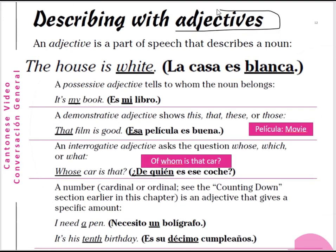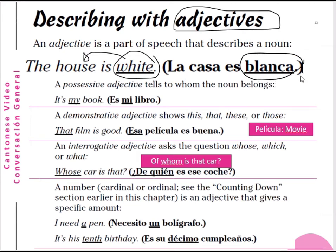Adjectives are also a very important part of speech. An adjective is a part of speech that describes a noun. For example, 'the house is white' — la casa es blanca. The color white is blanco, but when describing a feminine noun like casa, you must change blanco to blanca. A possessive adjective tells to whom the noun belongs. For example, libro is book — es mi libro, it is my book.